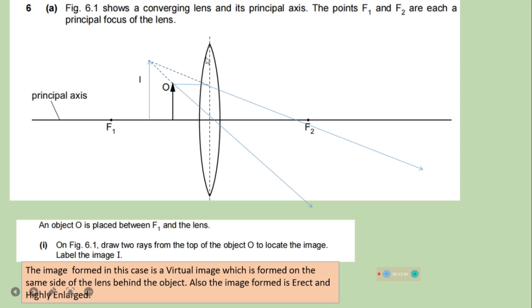This figure shows the converging lens and its principal axis. The points F1 and F2 are each a principal focus of the lens. An object is placed between F1 and the lens. On figure 6.1, draw two rays from the top of the object to locate the image. Label the image I. We have drawn the image here. This is a virtual image. So you can write that the image formed in this case is a virtual image which is formed on the same side of the lens behind the object. Also the image formed is erect, means upright, and highly enlarged.